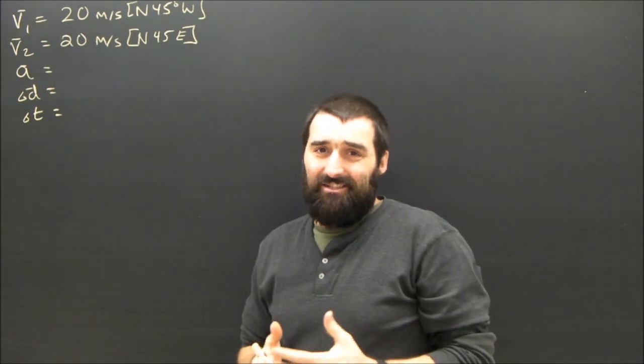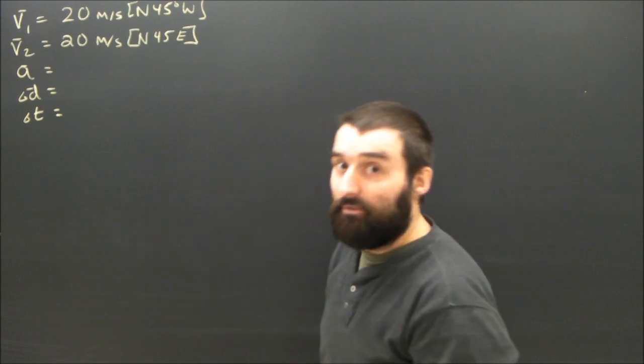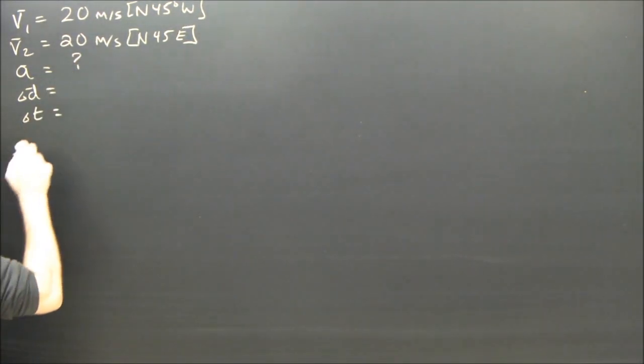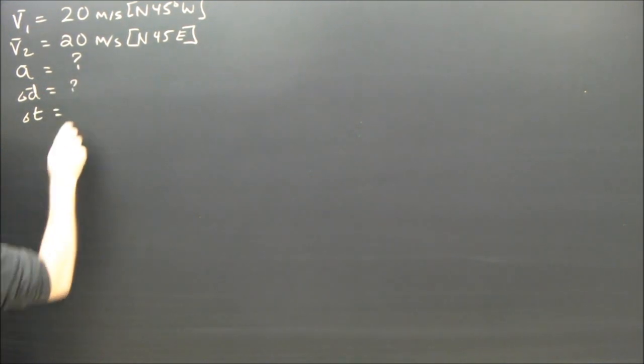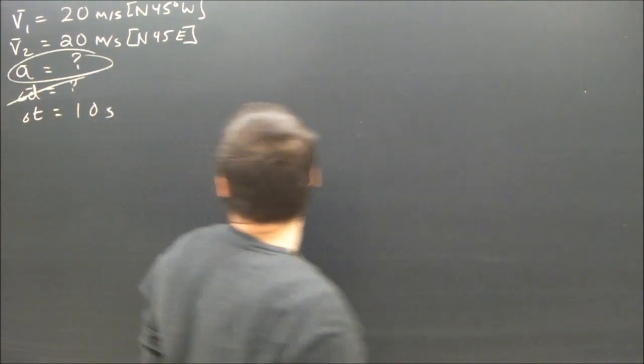So the speed is constant, but the velocity is changing. The direction is just as important as the number. The question is to find the acceleration of part A and to find the displacement of part B, given that the turn took 10 seconds. So obviously we're going to start with part A. It means we want to find the acceleration. We don't care at all about the displacement.